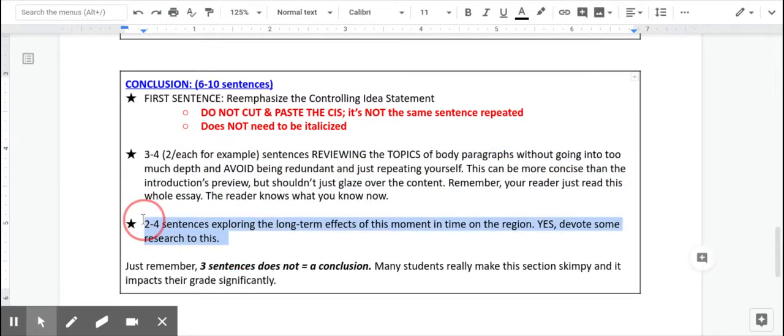Then you want to do about two to four sentences exploring the long-term effects of this moment in time on the region. And I say yes, devote some research to this. So I think that the sample papers, you can see some interesting long-term effects with Algeria and Vietnam about how imperialism left those nations. And, you know, just take a look at some of the things that have occurred in the 20th and 21st century in those areas. And even when that area achieved its independence, and if it has, and see if you can make a connection to imperialism. A lot of students leave this concept out and their conclusion isn't scored as highly as it could be with this edition.